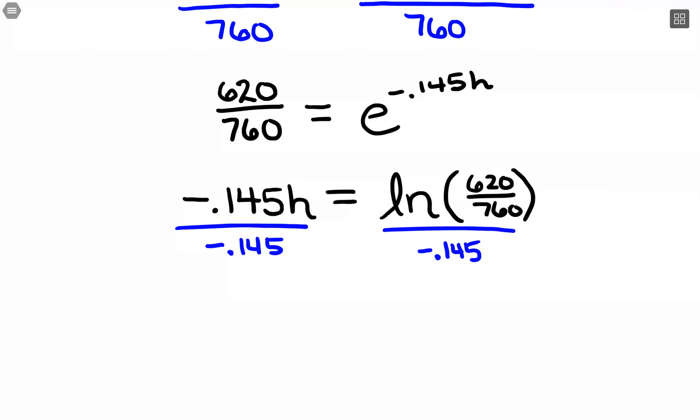And again, just to emphasize all of that, the 620 over 760 is all inside the logarithm. And this is like a block. You can't break it up. We can't divide in that negative 0.145 because that number's stuck inside there.